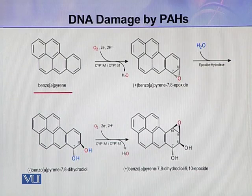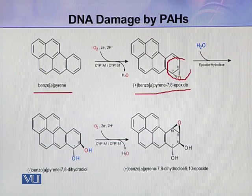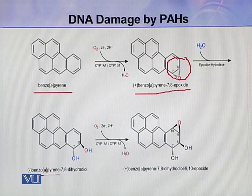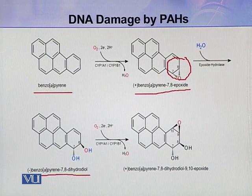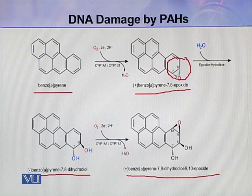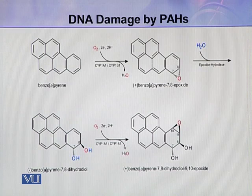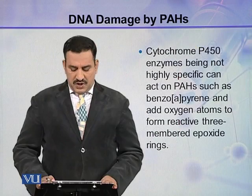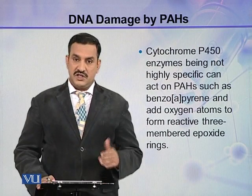Benzopyrene is activated by oxygen and converted into benzopyrene 7,8-epoxide. In the further pathway, water is added and this 7,8-epoxide is converted into benzopyrene 7,8-dihydrodiol. This intermediate is still not damaging to DNA. It is then activated again by oxygen and converted into the highly reactive damaging agent benzopyrene 7,8-dihydrodiol 9,10-epoxide. This epoxide will alkylate DNA. Cytochrome P450 enzymes are involved in the activation of this PAH.